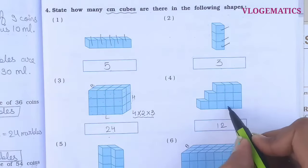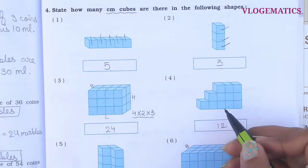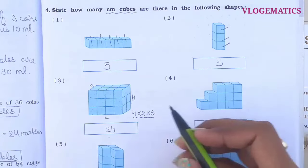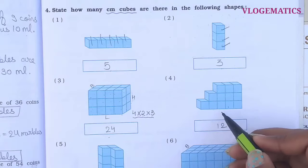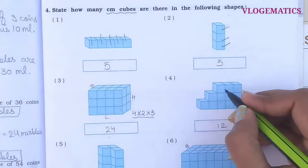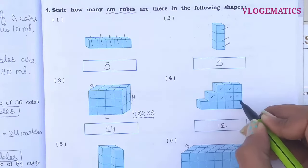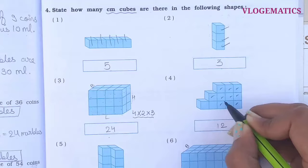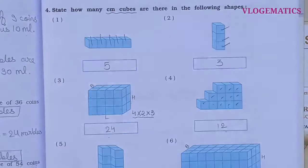For shapes that are not cubes or cuboids — where the length is not equal — we count the cubes individually. So for shape 4, counting: 1, 2, 3, 4, 5, 6, 7, 8, 9, 10, 11, 12 — here are 12 cm cubes.